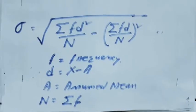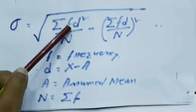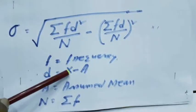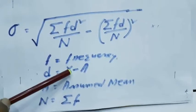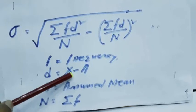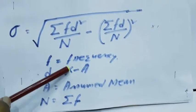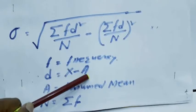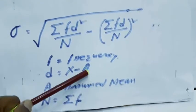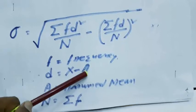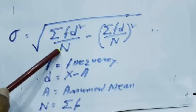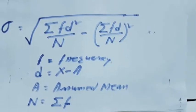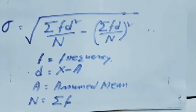In our previous classes also, we have used this formula, where F is frequency, D is the deviation, deviation from the values, A is assumed mean, means any value nearer to mean, and N is as usual meaning sum of the frequency.